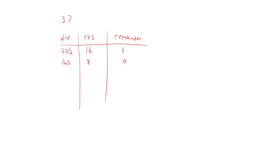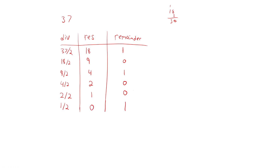We continue this process: nine divided by two gives four with a remainder of one. Four divided by two gives two with a remainder of zero. Two divided by two gives one with a remainder of zero. One divided by two gives zero with a remainder of one. These remainders are used to construct the binary number — we read them from bottom to top and write them out, giving us 100101. I've taken each of those remainder digits and written them from left to right instead of bottom to top, and this is the resulting binary number.